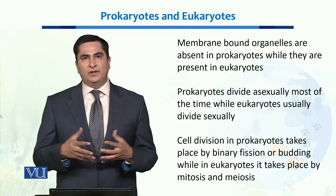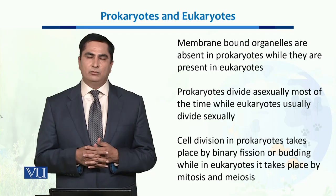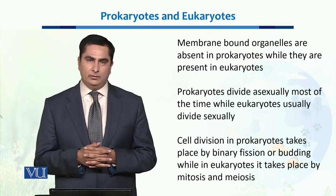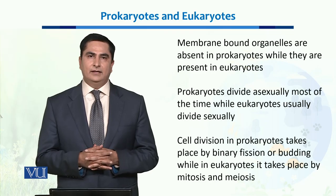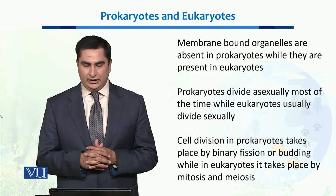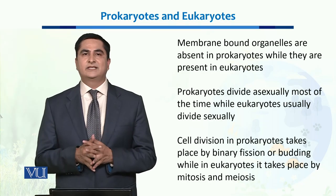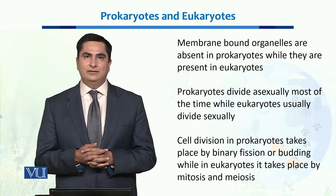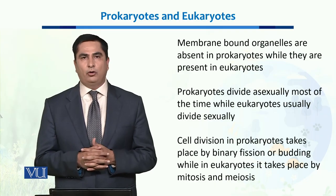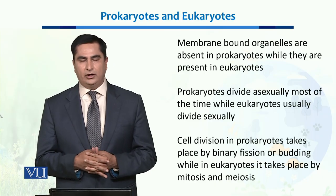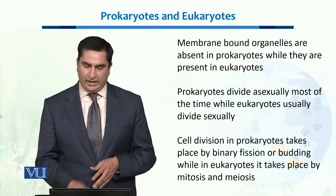When we talk about cell division, in prokaryotes it is mostly asexual, while in eukaryotes they mostly divide sexually. Cell division in prokaryotes takes place by simple division — called binary fission or budding — while in eukaryotes it takes place by mitosis and meiosis.